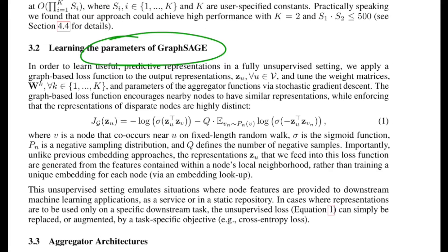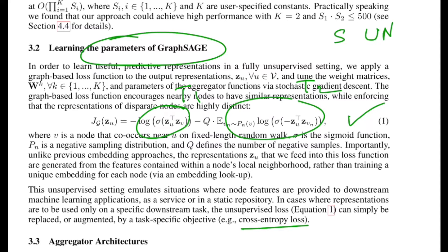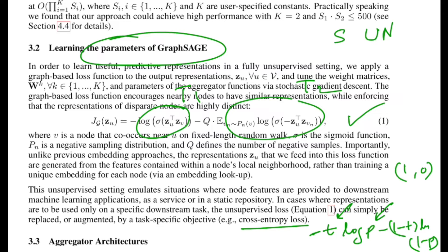Now talking about learning the parameters for GraphSAGE. The loss function has two terms — call them t1 and t2. The authors propose both supervised and unsupervised training. For unsupervised, as in node2vec and DeepWalk, if two nodes co-occur in a certain window, they should be close in higher-dimensional space. For supervised, you have a ground truth label for every node and apply cross-entropy loss — for example, with two classes: negative t·log(p) minus (1−t)·log(1−p), where p is the predicted probability and t is the ground truth label.